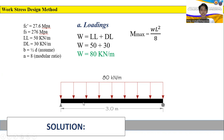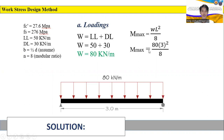Next, we compute the moment of the beam. The maximum moment is based on the shear and moment diagram: M_max is equal to wL² over 8. Substituting our values, w equals 80 multiplied by the span of 3 meters squared, all over 8. The maximum moment is equal to 90 kilonewton-meter, or equivalently 90 times 10 raised to 6 newton-millimeter.